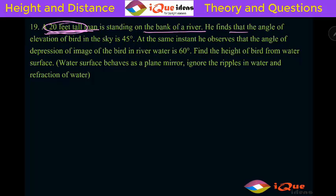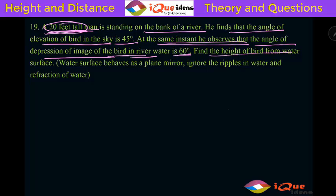He is standing on the bank of a river. He finds that the angle of elevation of a bird in the sky is 45 degree. At the same instant, he observed that the angle of depression of image of bird in the river water. So we have take the bird and the image at the same time is 60 degree. Find the height of the bird from water surface.